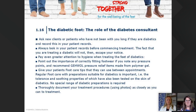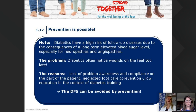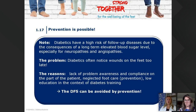I show them the progress of what's happening. Preventing and maintaining is the most important thing. Diabetics have a high risk of follow-up diseases due to long-term elevated blood sugar levels, especially neuropathies and angiopathies. The problem is that diabetics often don't notice anything on their feet. The reason is a lack of problem awareness, compliance, neglected foot care, and low education in the context of diabetes.